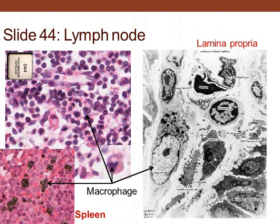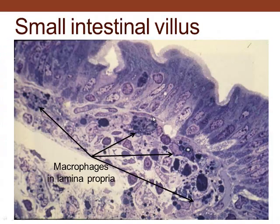Other cells visible here include a plasma cell — recognizable by the nucleus and abundant rough endoplasmic reticulum — and a lymphocyte with a spherical nucleus and little cytoplasm. There is also an endothelial cell lining a small capillary, and another lymphocyte nearby.